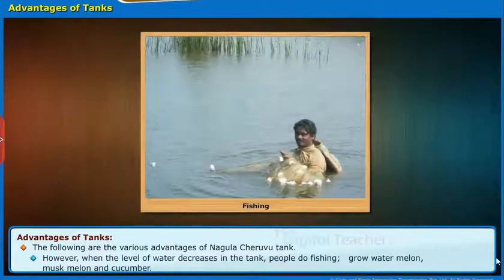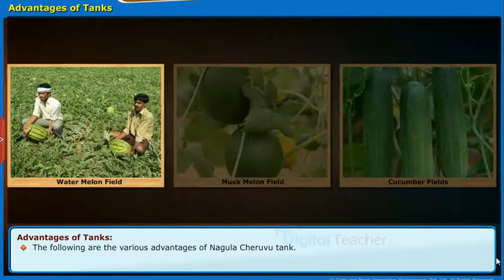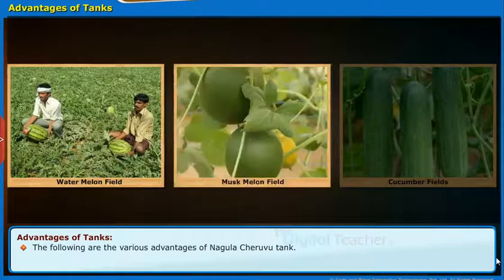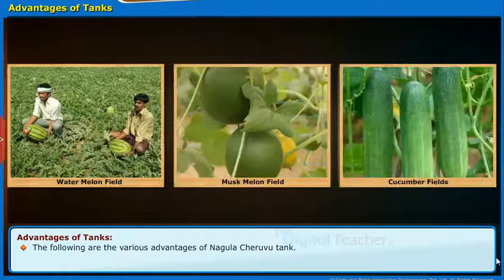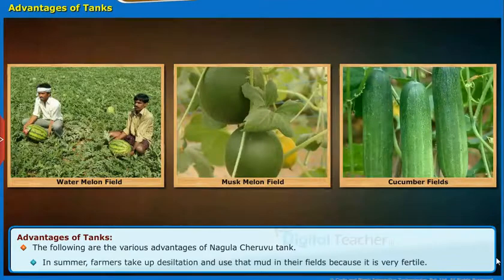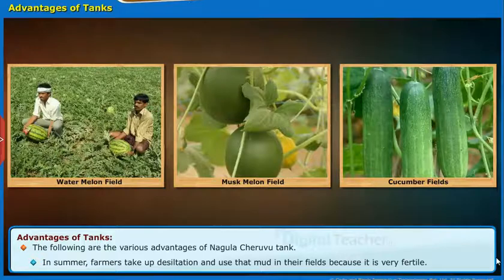However, when the level of water decreases in the tank, people do fishing, grow watermelon, musk melon and cucumber. In summer, farmers take up decantation and use that mud in their fields.